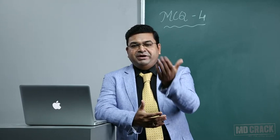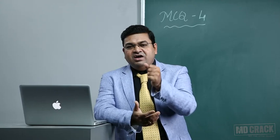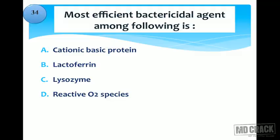Next question: the most efficient bactericidal agent among the following options — cationic basic protein, lactoferrin, lysozyme, or reactive oxygen species? There are two types of bacterial killing: oxygen-dependent and oxygen-independent mechanisms. Oxygen-dependent killing is the most important. Lactoferrin and lysozyme are oxygen-independent and less effective. Cationic basic protein is released by eosinophils and is relevant in parasitic infections. The correct answer is reactive oxygen species — free radical-mediated bactericidal activity is the most effective killing mechanism.